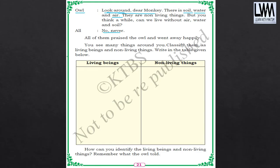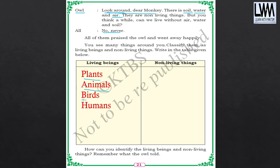Here you can see two tables — one for living beings and one for non-living things — and you need to fill them out. In the living beings table, you can write: plants, animals, birds, humans. For the non-living things, we have air, water, soil, table, chair, etc. The list goes on.